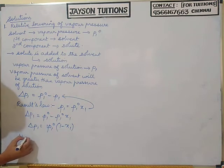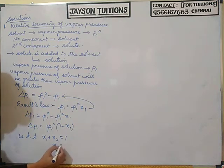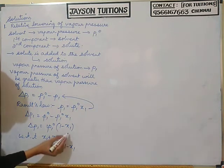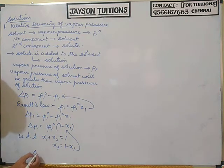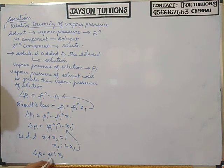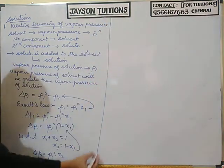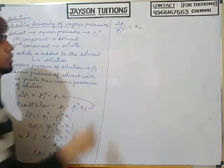We already know that the sum of the mole fractions X1 plus X2 equals 1, so 1 minus X1 equals X2. Substituting this, delta P1 equals P1 naught into X2. Bringing P1 naught to the other side, we get delta P1 divided by P1 naught equals X2.